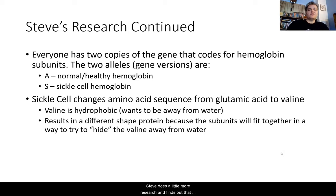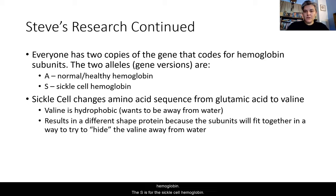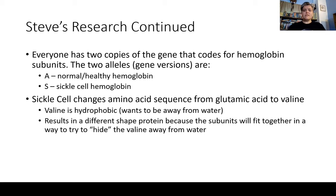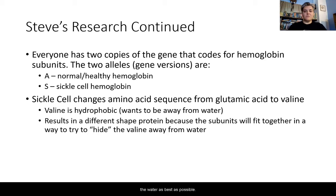Steve finds out that everyone has two copies of the gene that codes for hemoglobin. These two alleles are A and S: A is for normal healthy hemoglobin, S is for sickle cell hemoglobin. Sickle cell changes the amino acid sequence from glutamic acid to valine. Valine is hydrophobic — hydro means water, phobic means fearing — so it wants to be away from water. This results in a different shaped protein because the subunits fit together differently, trying to hide that valine away from the water.